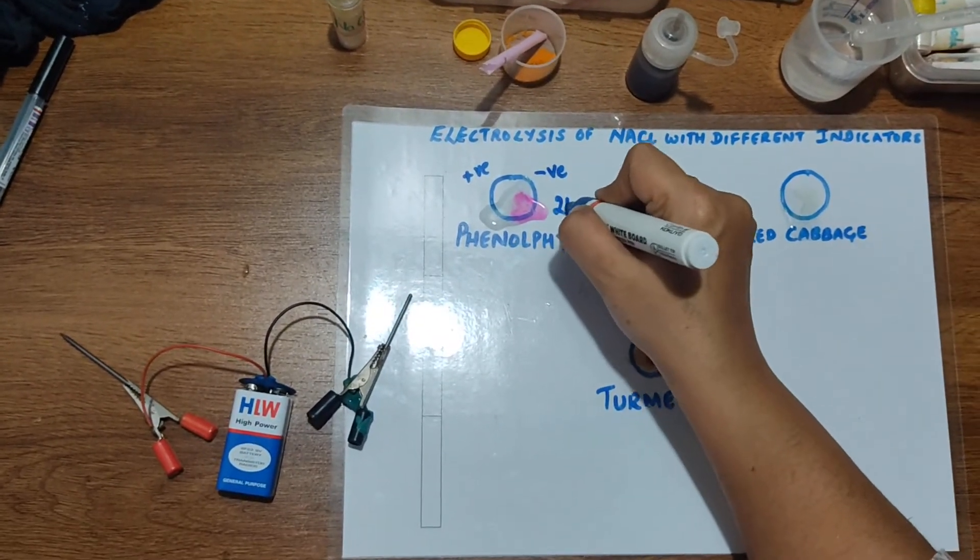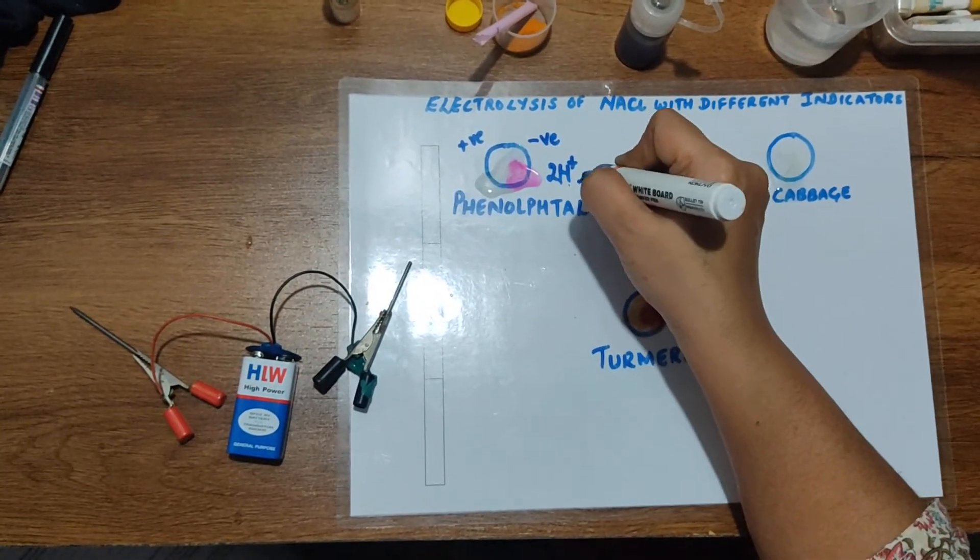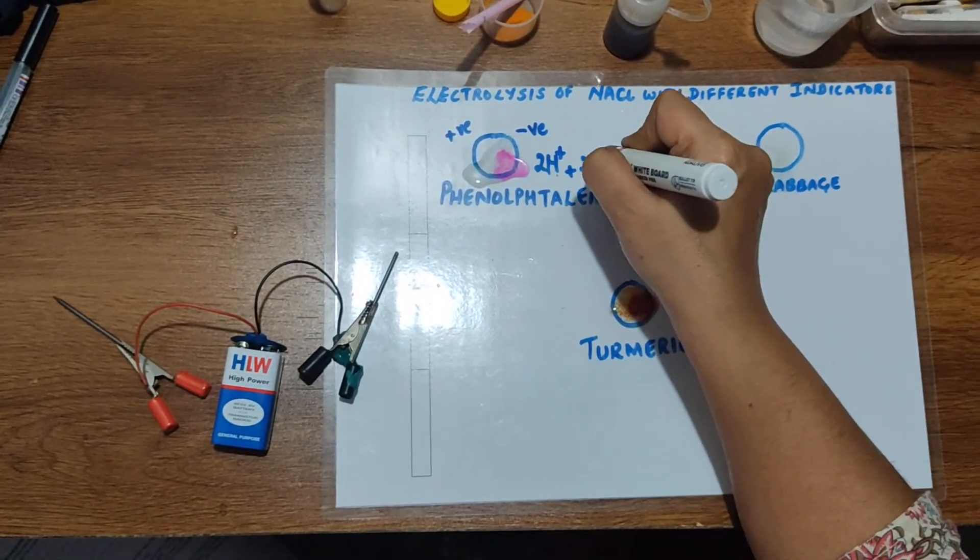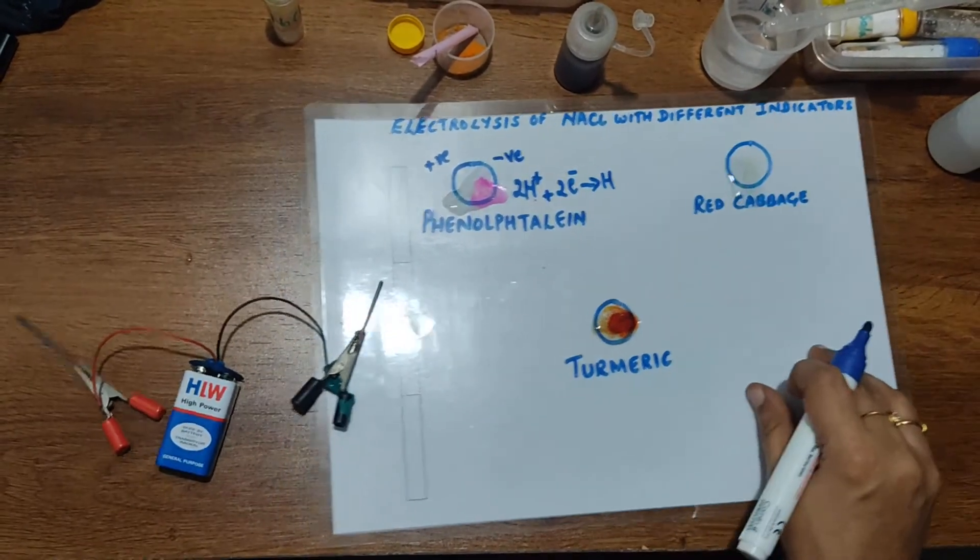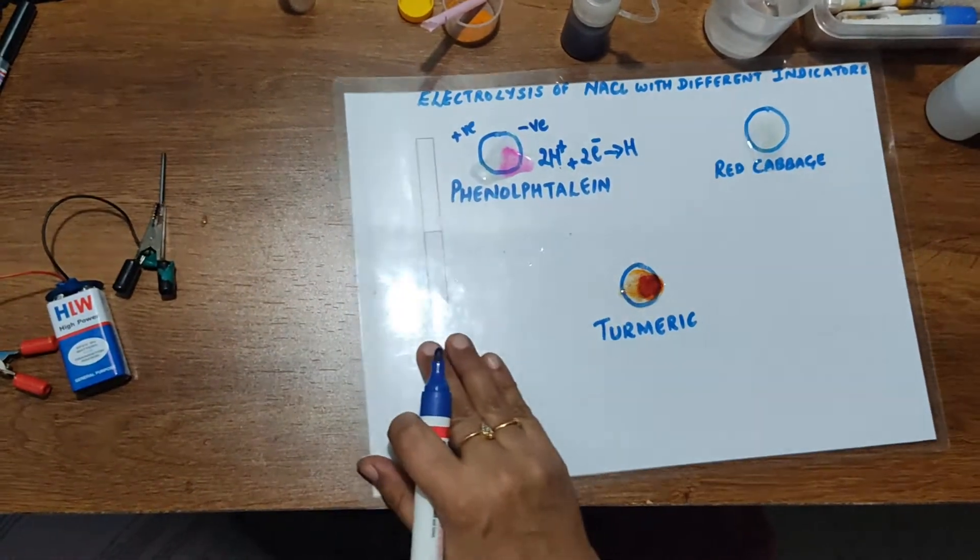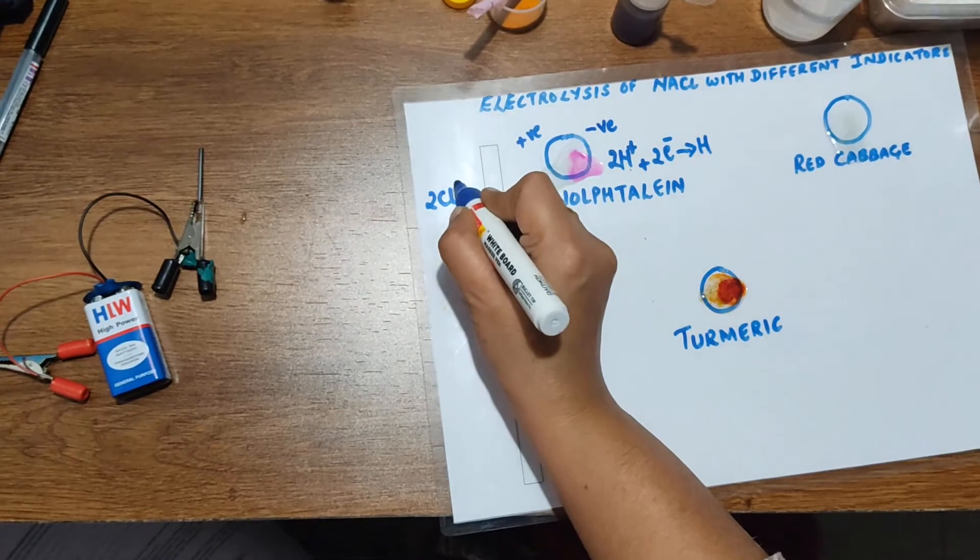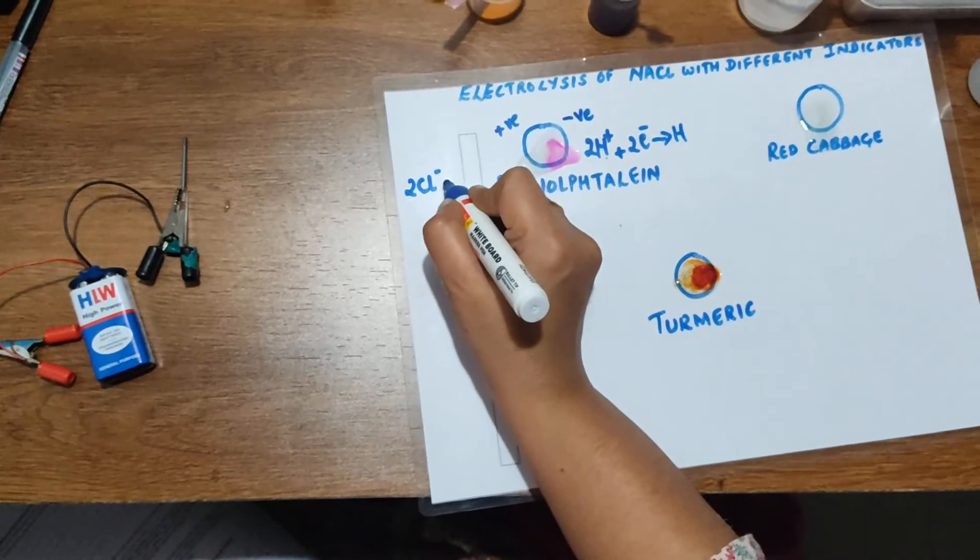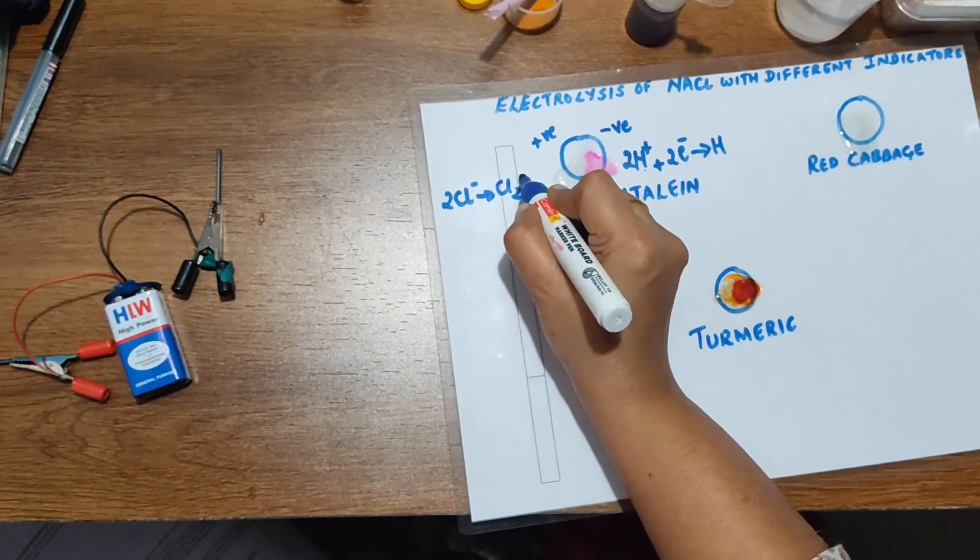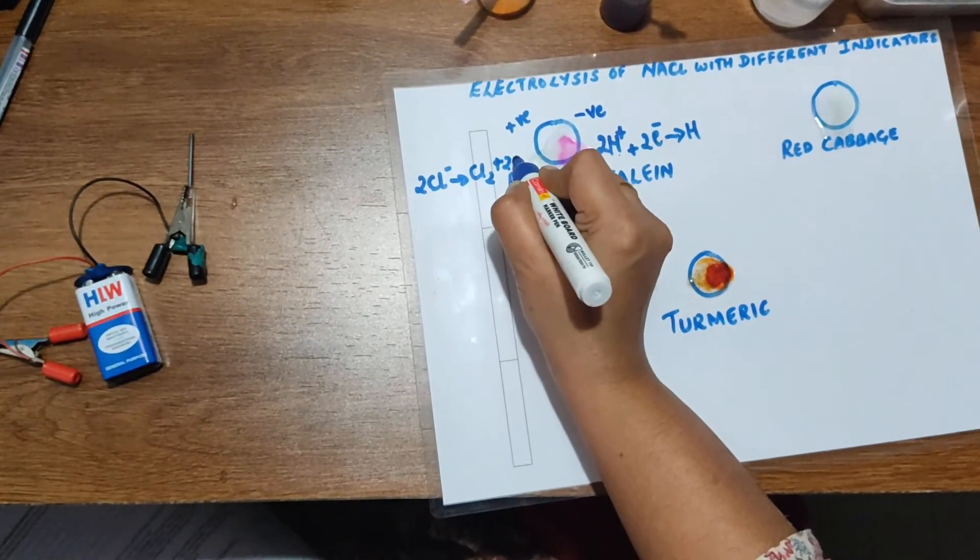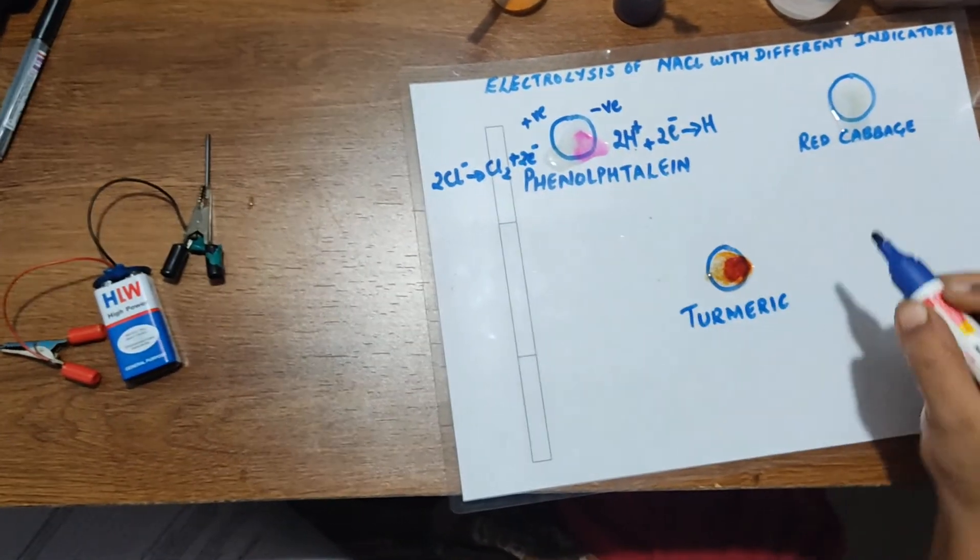Here the reaction would be hydrogen gas at the negative electrode, and at the positive electrode it would be chlorine gas liberated here.